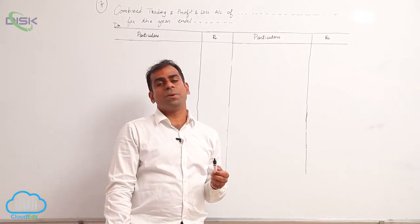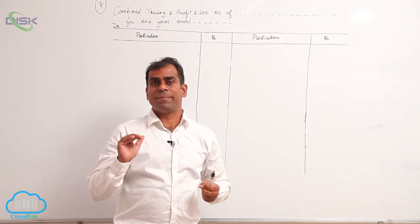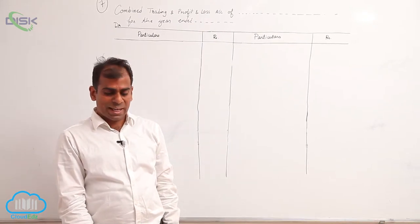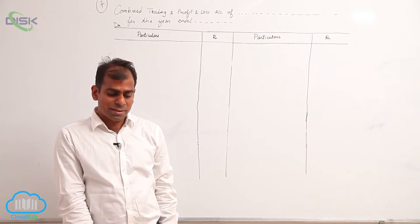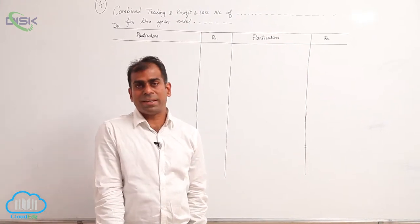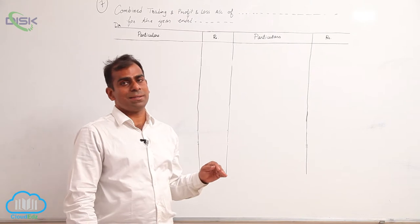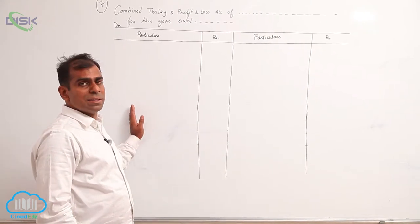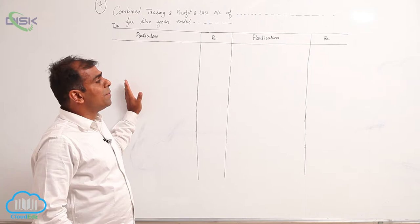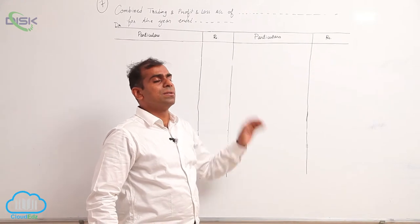As I read out, you mark or underline the items that come in the trading account first. So: opening stock, purchases, sales, clearing charges, closing stock, wages, purchase returns, sales returns, and customs duty. These are the items which fall under the category of direct revenues and direct expenses, and these are to be taken in the trading account.